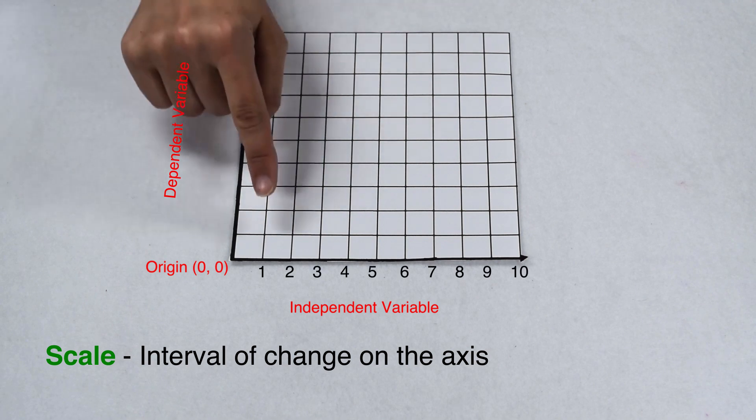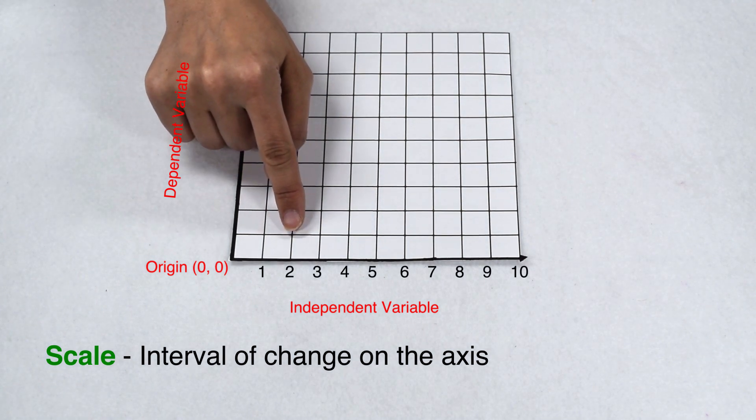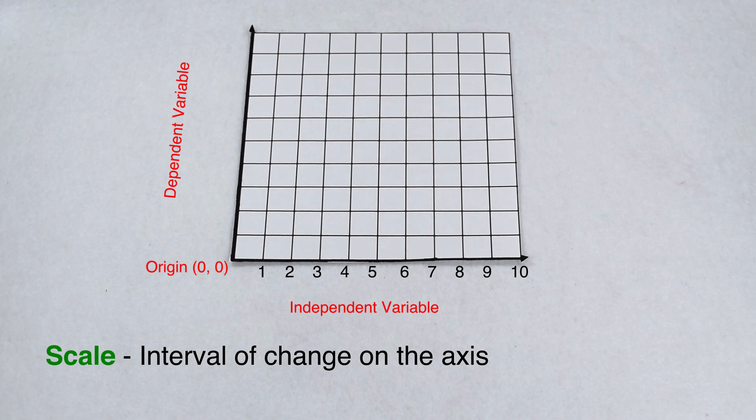If we look at our x axis, we can see that we count by ones: one, two, three, four. So we would say our x axis has a scale of ones.